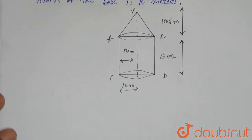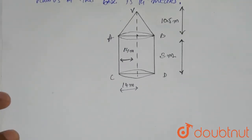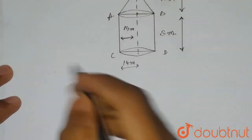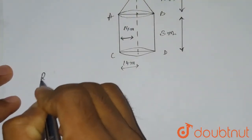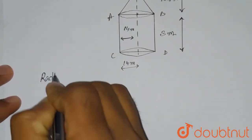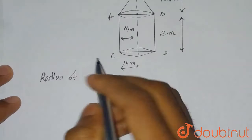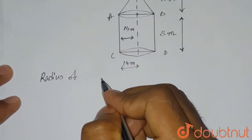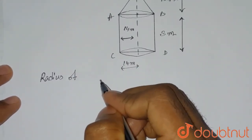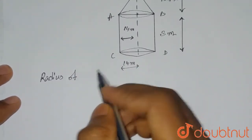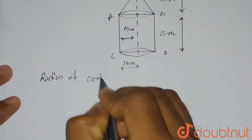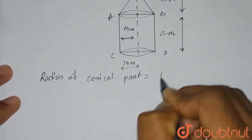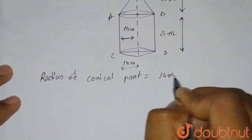The radius of the conical part is given to be 14 meters. So, the radius of the cylindrical portion is 14 meters. Similarly, the radius of the conical part will also be 14 meters.